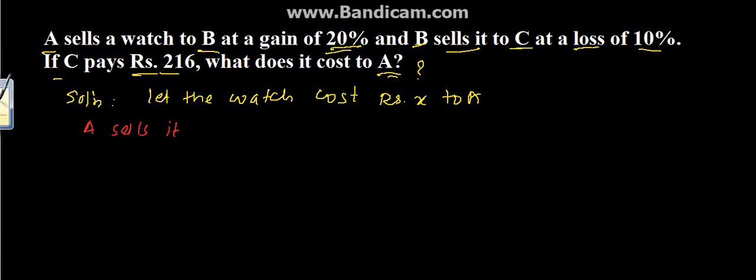Now A sells it to B for a gain of 20%, so we can write A sells it to B for rupees 120 upon 100 into X. We have written 120 because 100 plus 20, the gain. For example, if the cost is 100, the gain is rupees 20, so it comes to 120 upon 100. We have derived this ratio into X, which will come to rupees 1.2X.